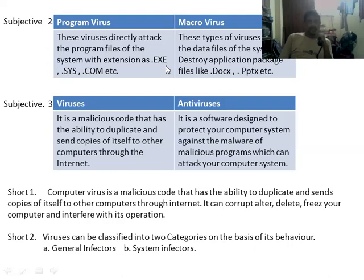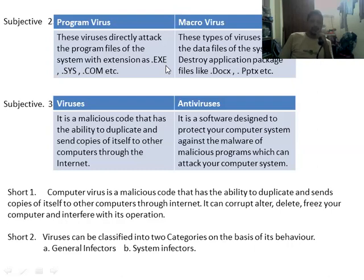Question number three: difference between viruses and antivirus. A virus is a malicious code that has the ability to duplicate itself and send copies to other computers through the internet. Once your system is infected, if you are connected to other devices via a network, it can duplicate and send a copy. Antivirus is software designed to protect your computer system against malware and malicious programs that can attack your system.